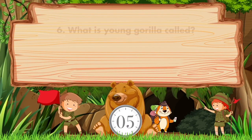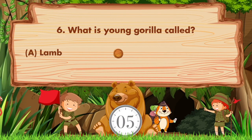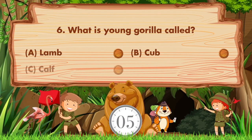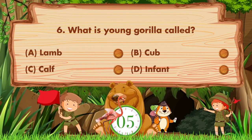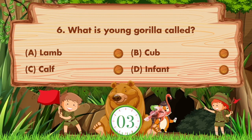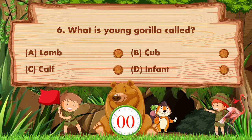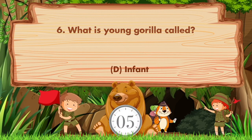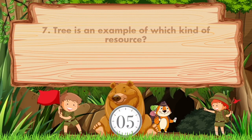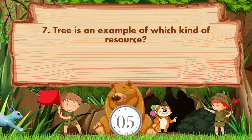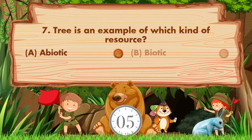What is a young gorilla called? Option A lamb, B cub, C calf, D infant. Answer is option D, infant.